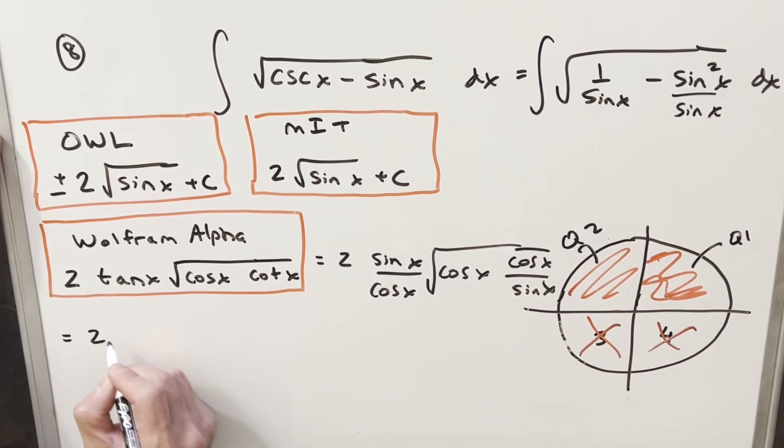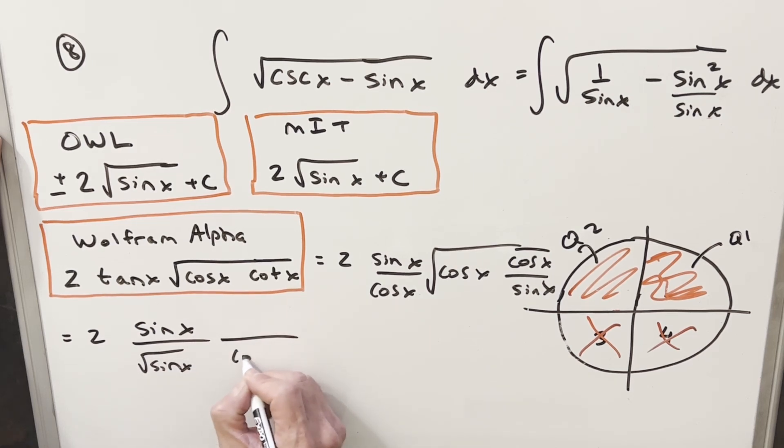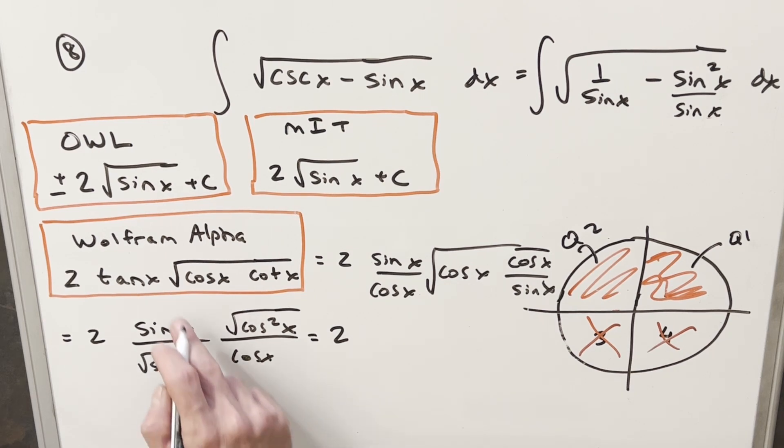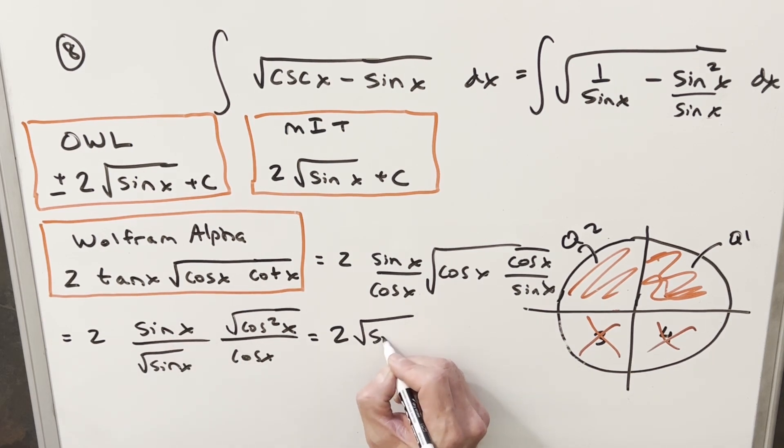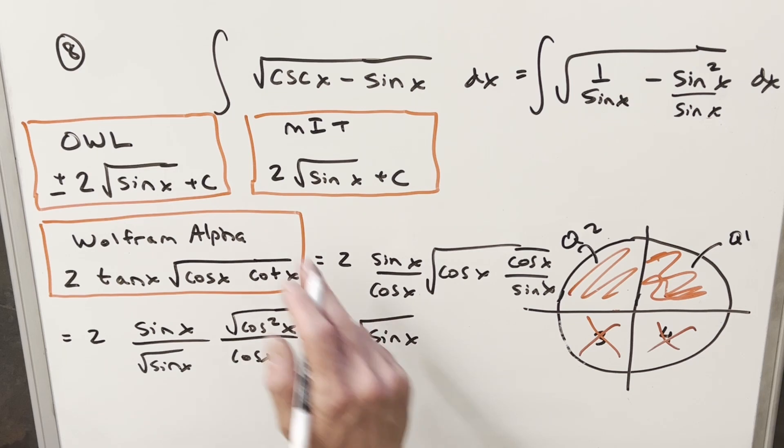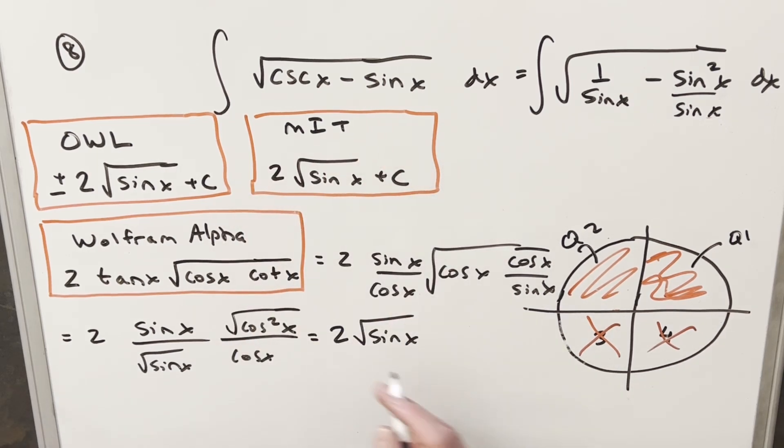So now I'm going to take this and rearrange it. I'm going to group the sines together. So I'm going to write this one as a square root of sine x here. And then we're going to have a cosine x, this cosine x in the denominator and this is going to be square root of cosine squared x. Okay, now from here when I divide sine to the half x into sine x, that's going to give me square root of sine x. And that's MIT's solution, but we still have got more to go.